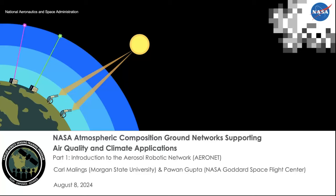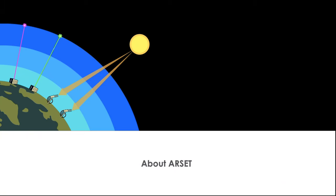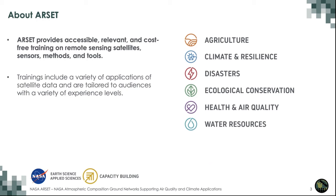Welcome everyone to this ARSET training on NASA's Atmospheric Composition Ground Network Supporting Air Quality and Climate Applications. ARSET, which is the NASA Applied Remote Sensing Training Program, provides accessible, relevant, and cost-free trainings on remote sensing using satellites and other methods such as ground networks, which we'll be talking about today. These trainings cover a variety of different application areas, and this particular training is in the health and air quality application area.